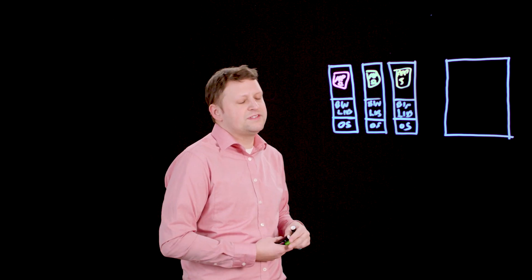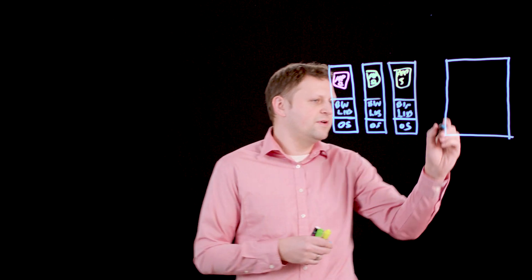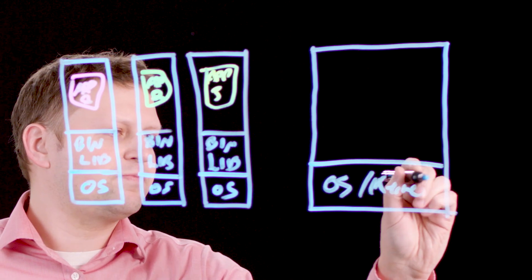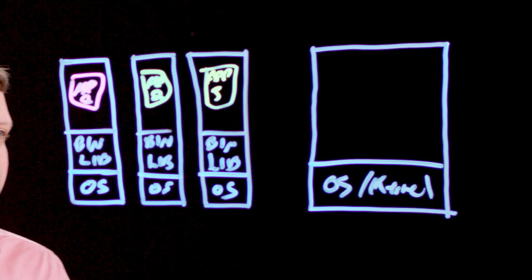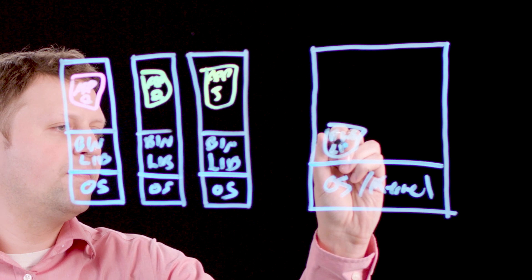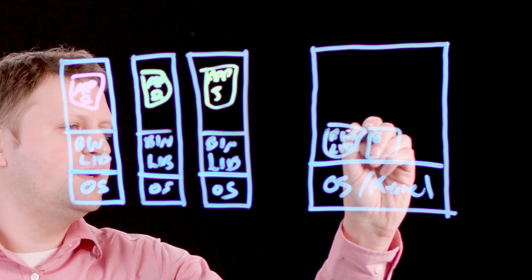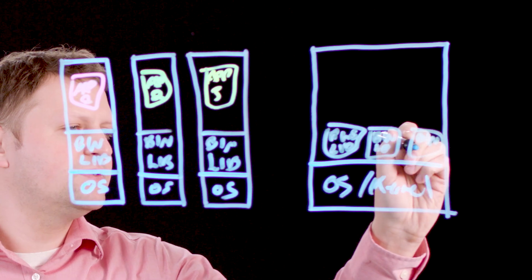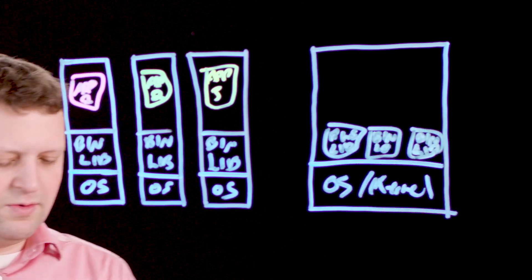So if we look at how that operates inside of a container, it's actually a little bit different. We've got our operating system and our kernel at the bottom. And that is actually shared with our bins and libraries that are unique for each application. So we'll have three of them here, just like this. Bins and libs.